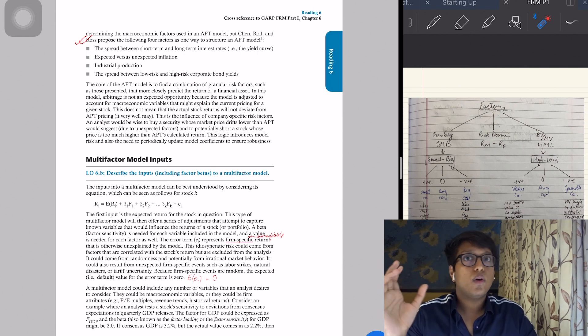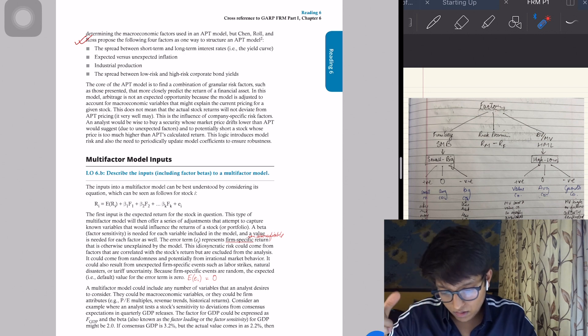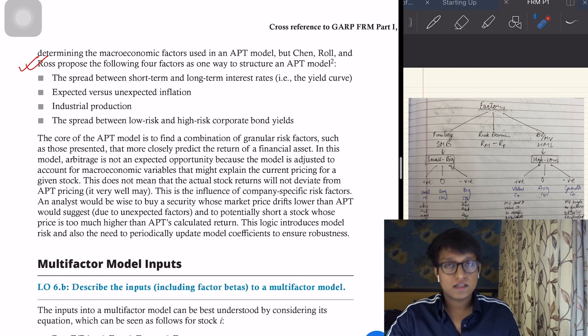Arbitrage Pricing Theory does not give you all the factors that are required. Chen, Roll, and Ross—it says they propose four basic factors for an APT. The first is the spread between short-term and long-term interest rates, that is the yield curve. If this trend is increasing, that means in the long run rates are increasing, which means there is long-run inflation or inflation expectation. Each factor needs to be considered separately. They propose some factors because otherwise it was very vague—what are the factors, people were asking. It was good because it left companies to consider factors that affect them specifically, but it was bad also.